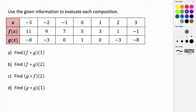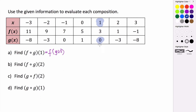First we're going to look at f of g of 1. We can rewrite this as f evaluated at g of 1. So the first thing we need to do is figure out what g of 1 is. We go to 1 for our input and look at the output for g. So we're evaluating f at whatever the output of g is, and when x is 1, the output of g is 0.